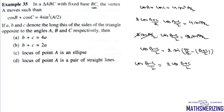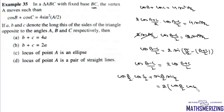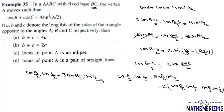Expanding using the cosine difference formula: cos((B-C)/2) = cos(B/2)cos(C/2) + sin(B/2)sin(C/2), and 2 cos((B+C)/2) = 2[cos(B/2)cos(C/2) − sin(B/2)sin(C/2)]. Simplifying, we get cos(B/2)cos(C/2) upon sin(B/2)sin(C/2) equals 3.